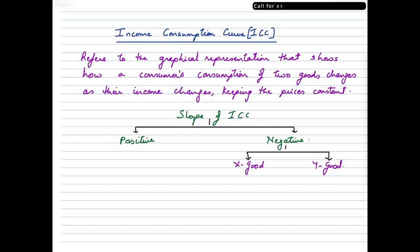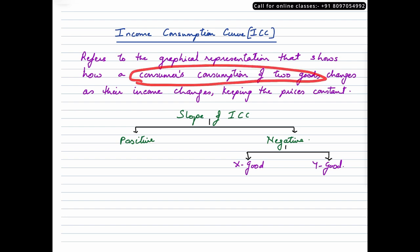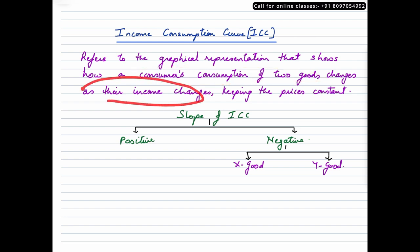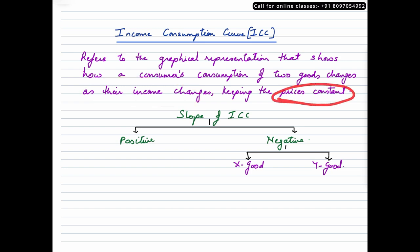Income consumption curve refers to a graphical representation that shows how a consumer is changing his consumption of two goods given a change in their income, keeping the prices of both the commodities constant.